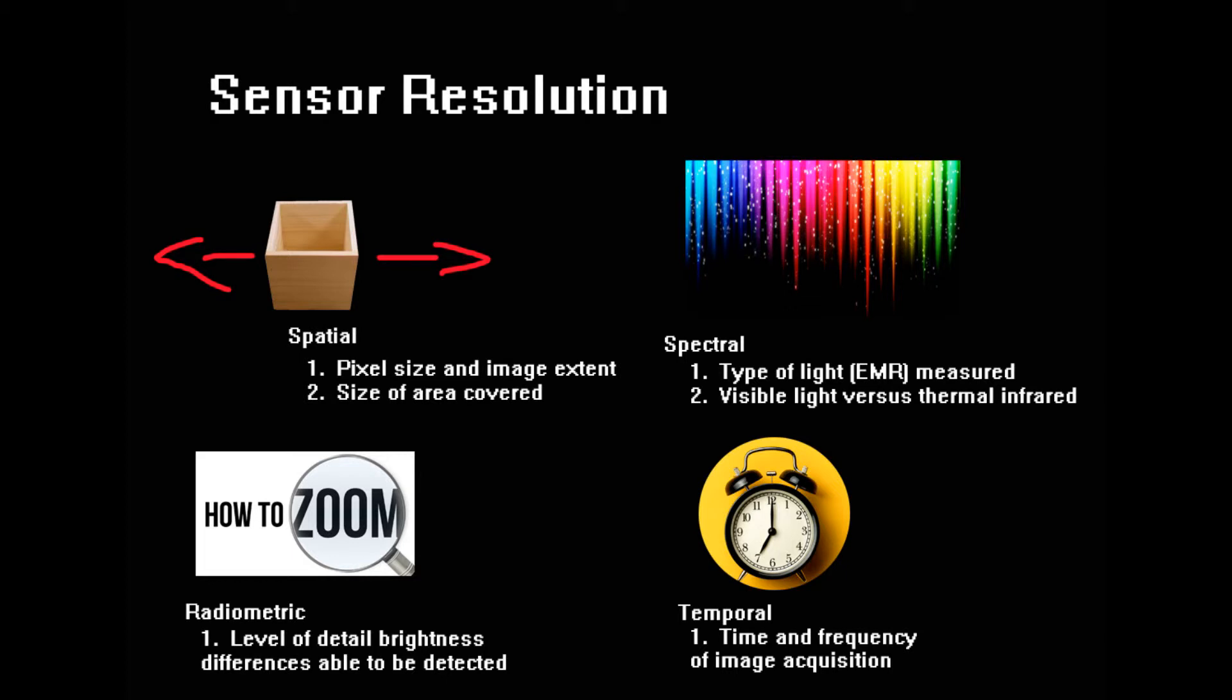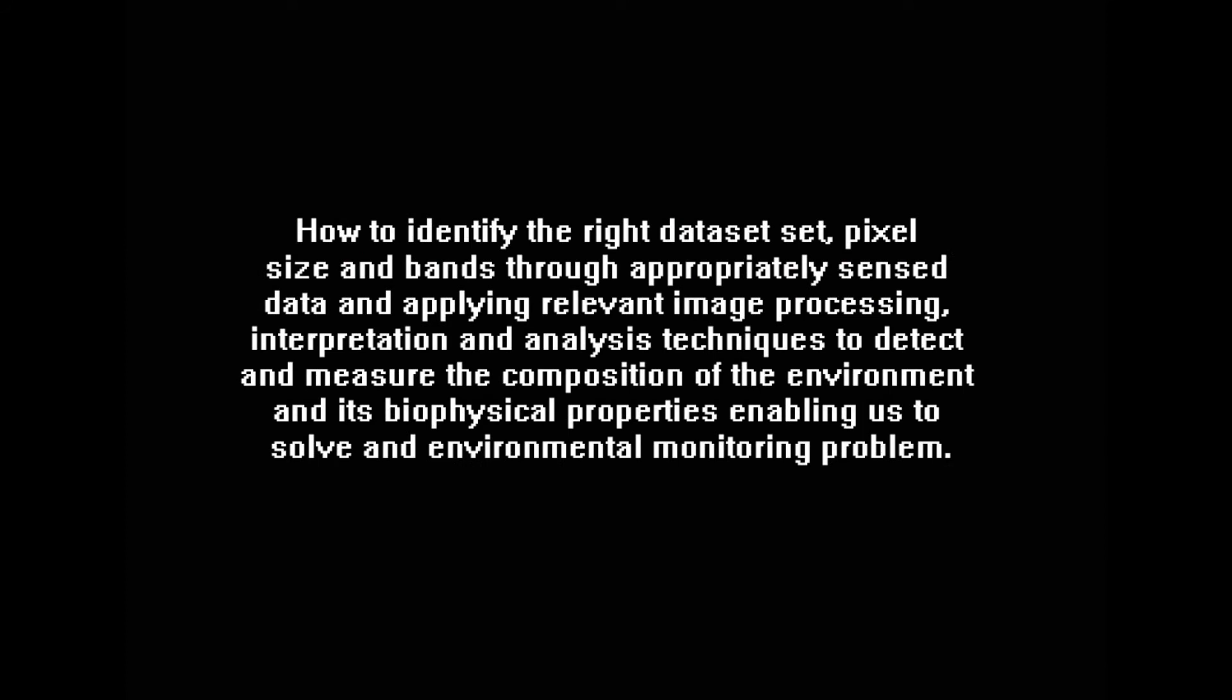Then you have remote sensing data characteristics, which is an audible map that has a feature of zooming in which decreases pixel size. As an overview of what we'll be doing in this course, that's pretty much how to identify the right dataset, pixel size and bands through appropriately sensed data, and applying relevant image processing interpretation analysis techniques to detect and measure the composition of the environment and its biophysical properties, to solve a problem that we will be given later.